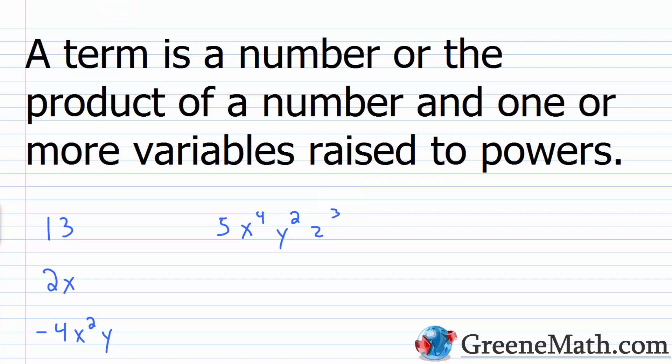If you have a number that is not multiplying a variable — like 13, just hanging out by itself — it's referred to as a constant. You could say it's a constant term or just a constant; its value is not going to change, it's always just going to be 13. If you have a number that's multiplying a variable or variables, like the 2 in 2x, it's referred to as a coefficient. So here 2 is the coefficient of the variable x.